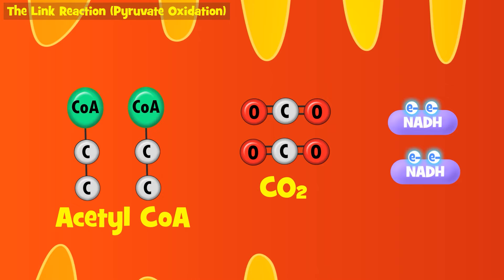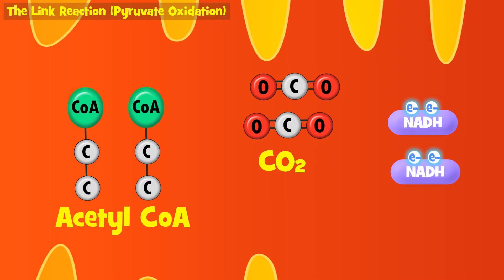CO2 is one of the overall products of cell respiration, and we ultimately release six CO2 molecules for every glucose that enters respiration. Here we see two of those six CO2s get released — ultimately, you breathe them out.